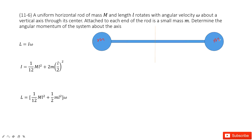For angular momentum in this system, the first thing we can consider is that angular momentum is the moment of inertia times omega, I times omega. Omega is given, so we only need to find I.